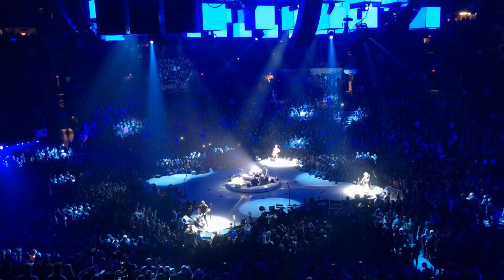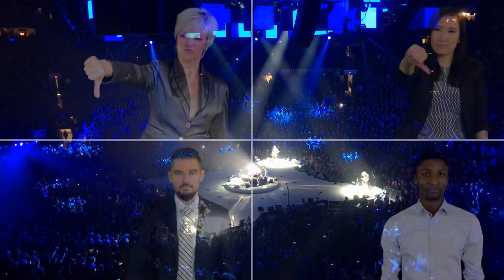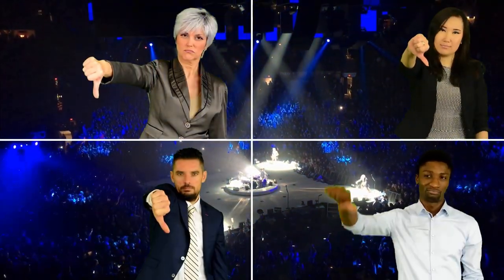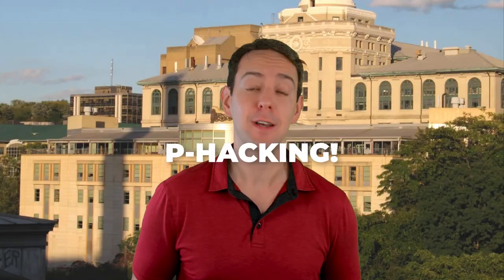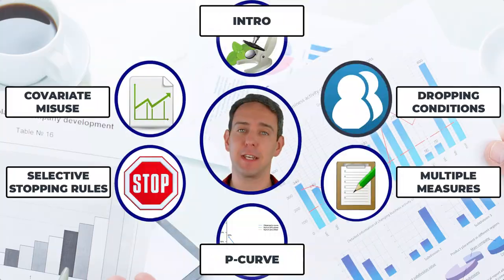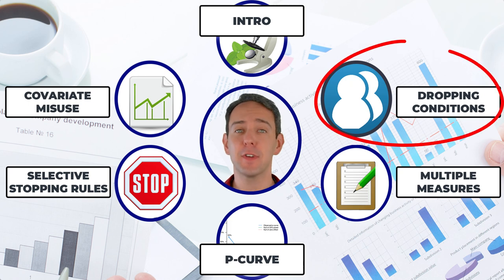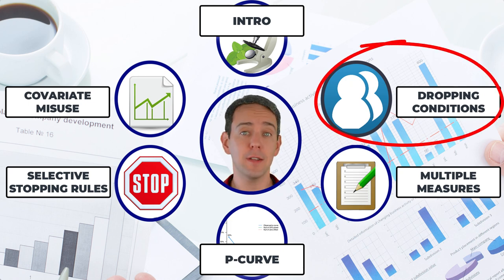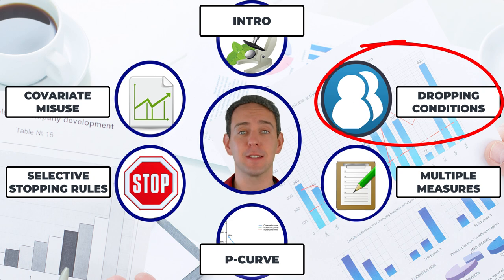So, you want to be an academic rock star but just don't have the chops? No problem! We can make you the hottest thing since Einstein with this one easy trick: p-hacking! Kidding aside, this video is part of a series on p-hacking — what it is and why it's so dangerous for science.